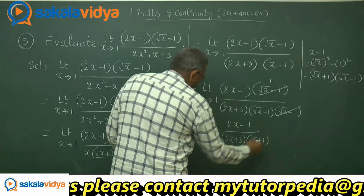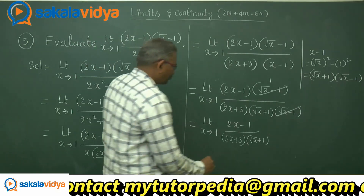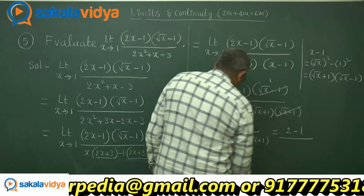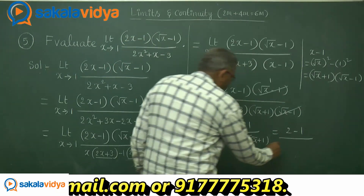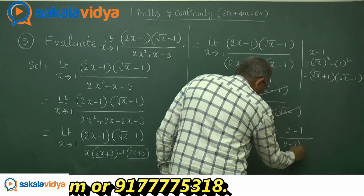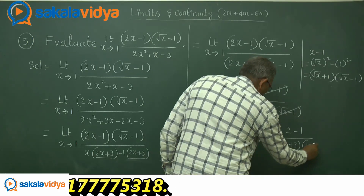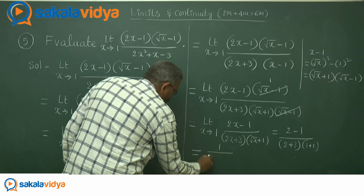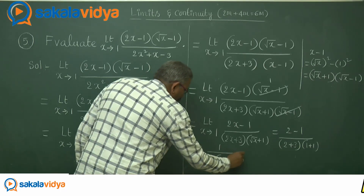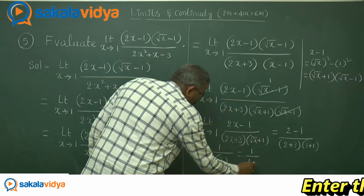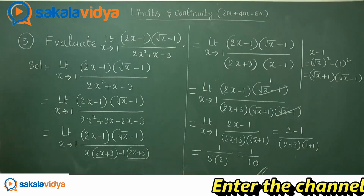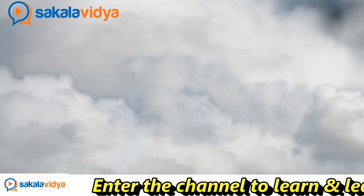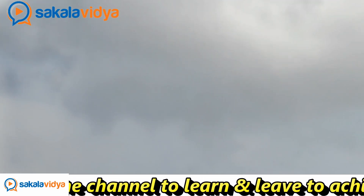Just substitute the limit x equals 1. We get: (2 times 1 minus 1) upon (2 times 1 plus 3)(√1 plus 1) = 1 upon (5)(2) = 1 upon 10. So 1 by 10 is the answer.